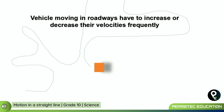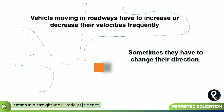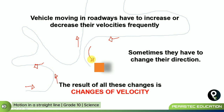In certain areas, the vehicle was moving faster. In certain areas, the vehicle was moving slower. Sometimes they have to change their direction also. Now if you see this, the vehicle was going in one direction when it was starting, and the direction is changing all through the road. Finally, the direction is not exactly as it was when it started.